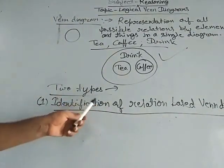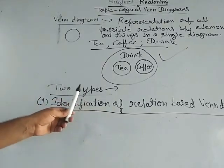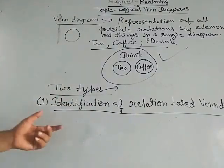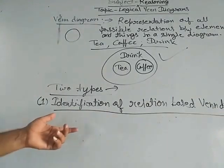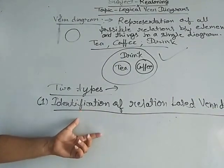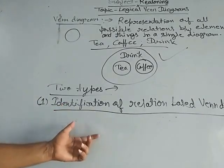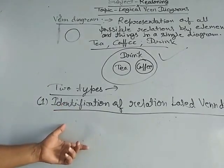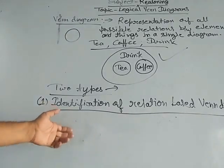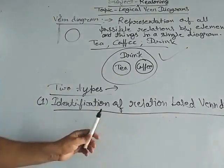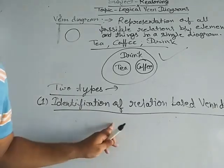In this type, the relationship in a group of elements is represented by circles and you have to find out the correct diagram. You are asked to represent the elements in circles and make a single diagram. In your examination, these diagrams are given to you in options and you have to choose the correct diagram. It means to identify the correct diagram for the given elements or things.